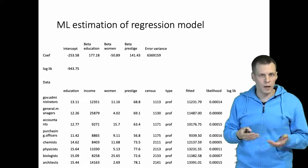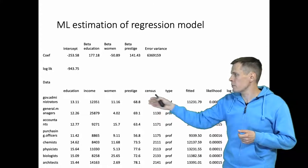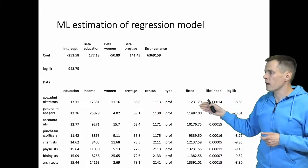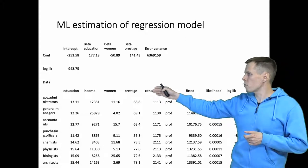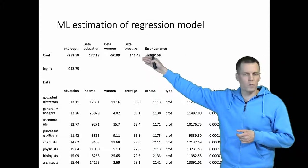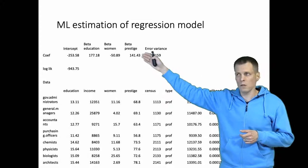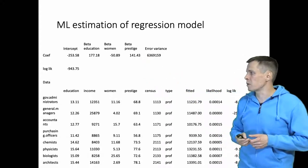women and prestige as explanatory variables, income as the dependent variable. The fitted value is obtained by multiplying the values of education, women, and prestige with the corresponding coefficients and adding the intercept to the model.